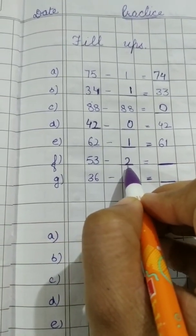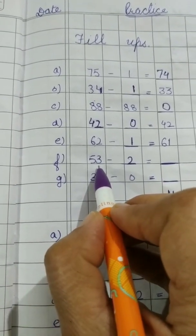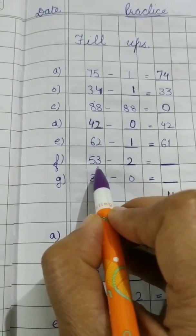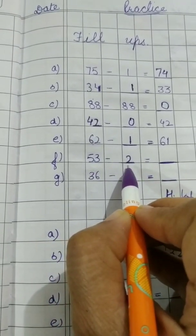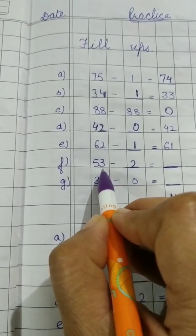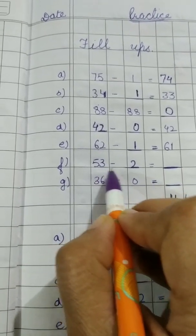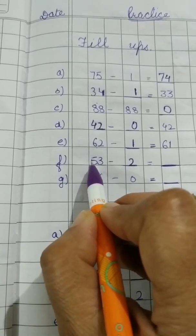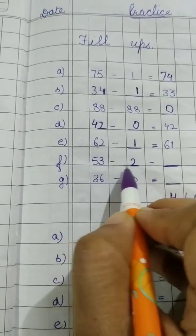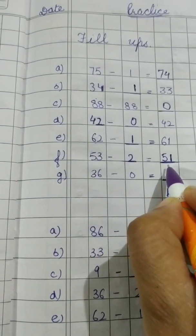53 minus 2. See children, this question is a little different here. Here it is a 2 digit number and here it is a single digit number. So we have to subtract 1 space and 1 space. Here it is 3 and here it is 2. So we have to directly subtract 3 and 2. We are not supposed to do anything with this 10 digit number. 3 minus 2, 1 and the digit at 10 space will remain as it is. 51.